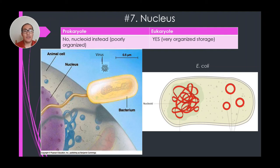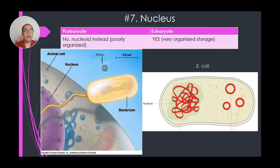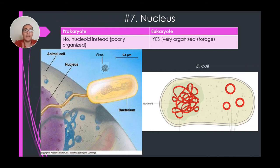Number seven: the nucleus. Both prokaryotes and eukaryotes have a nucleus, but the eukaryotic nucleus is membrane-bound and stores DNA inside. The prokaryote has a nucleus-like structure with no membrane boundary — it's kind of free-floating — but it also contains genetic information. Instead it's called a nucleoid, meaning nucleus-like. I'm showing a picture of E. coli, one of the most researched bacteria, which has shed light on how bacteria adapt mechanisms for dealing with disease.